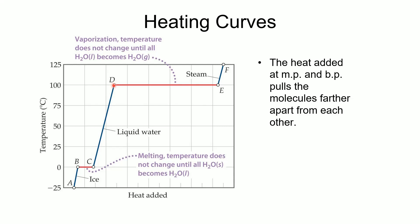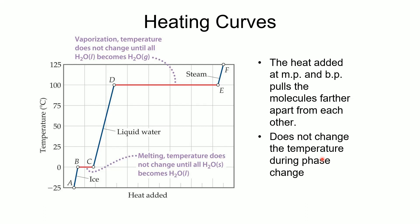Once all the ice is melted, any additional heat increases the temperature of the water, ending at the boiling point of 100°C. At point D we have 100% water, and at point E we have 100% steam. That is a large energy segment because the enthalpy of vaporization is always a fairly large number. Any additional heat added to the steam simply increases the temperature of that steam. During phase changes, the temperature does not change.